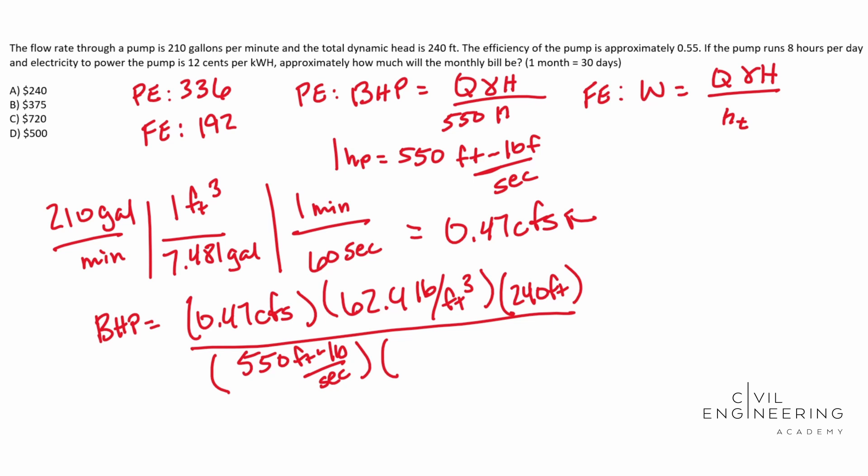We're going to multiply that by our efficiency in decimal form, so 0.55. In this particular case, they could have given you 55% and you would have just had to convert over to a decimal. So whenever you solve for this, you should end up with 23.27 horsepower.